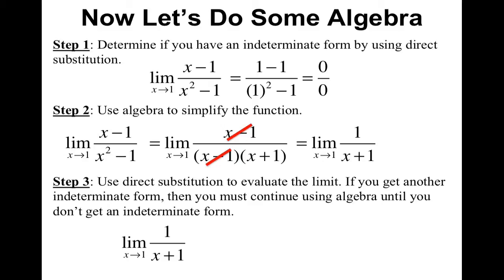Now step three is to go ahead and use direct substitution to evaluate the limit. If you get another indeterminate form, then you must continue using algebra until you don't get an indeterminate form anymore. So I'm going to go ahead and plug in one for x. When I do so, we see we get one half, which we already knew was the correct answer.